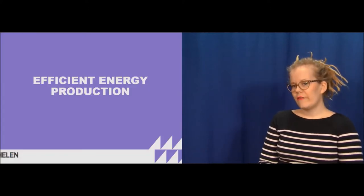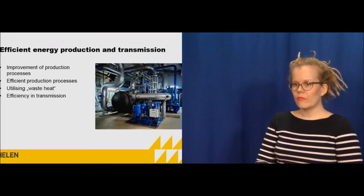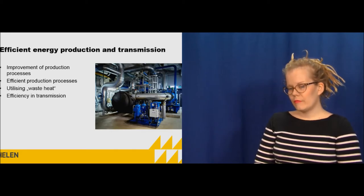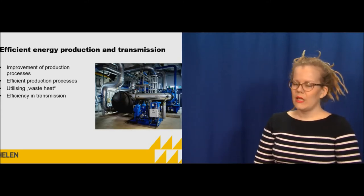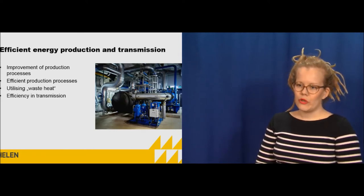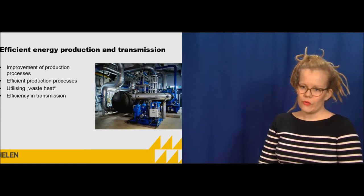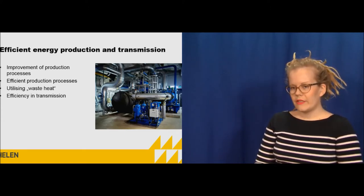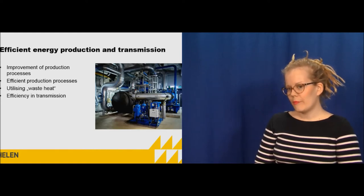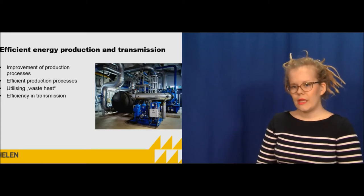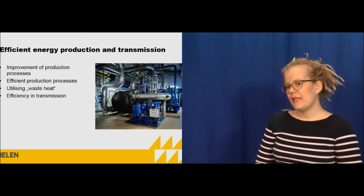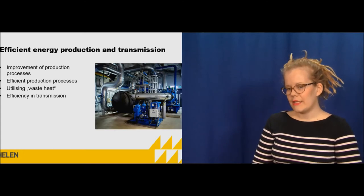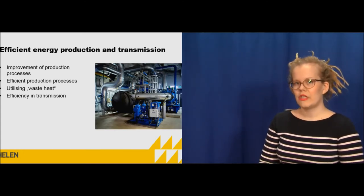So then we go to efficient energy production. In energy production and transmission we can improve efficiency in different ways. We can improve production processes — basically modifying turbines so that they produce more energy from the same amount of fuel, and also making other technical changes to the processes. Then we can use more efficient production processes, for example combined heating and power production. We can also utilize so-called waste heat, and think about efficiency in transmission — checking that our power lines and heating and cooling transmission networks are efficient and we are not losing energy in that.